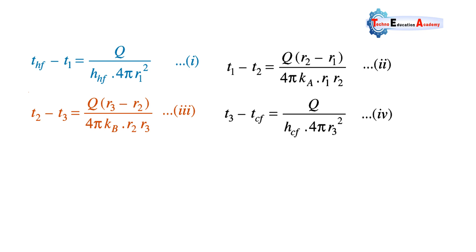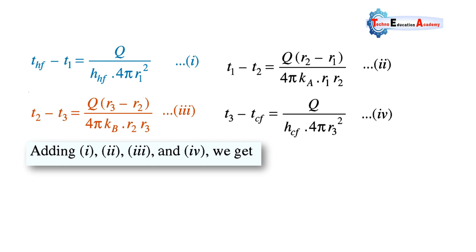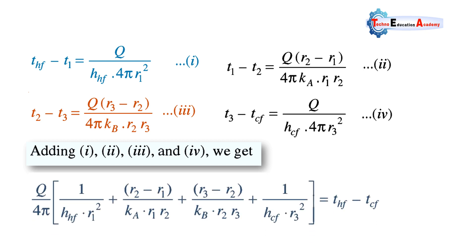Now we add equations 1, 2, 3, and 4. The Q term appears in the numerator, and 4π is common in the denominator, so it is kept outside the bracket. When addition takes place, the intermediate temperatures cancel out: thf minus t1, then plus t1 cancels; minus t2 plus t2 cancels; minus t3 plus t3 cancels. The remaining temperature difference is only thf minus tcf.